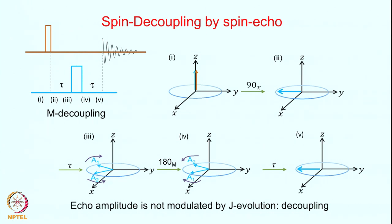We can also achieve decoupling by using the spin echo. In the normal spin echo, you apply the 180-degree pulse on both A and M. However, if you want to do decoupling, you apply this 180-degree pulse only on the M spin and not on the A spin at all. Let us look at the stages of the magnetization — points 1, 2, 3, 4, and 5 — and what is the orientation of the magnetization at these individual time points.